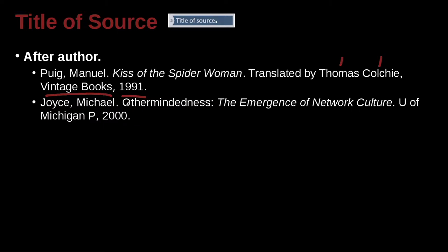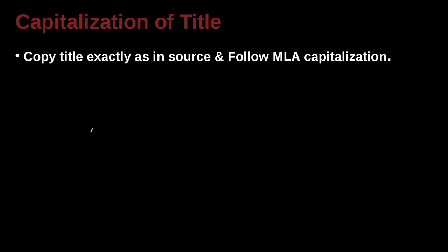Actually, this here should also be italicized — The Emergence of Network Culture. So this is the name of a book, and it's from University of Michigan. What does P mean? Press. That is one of the abbreviations MLA allows you to use.